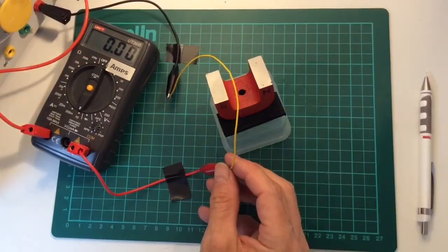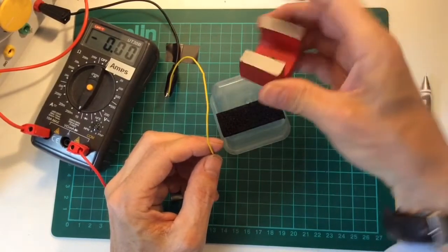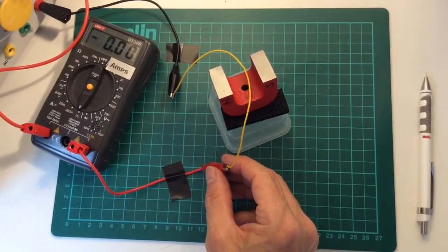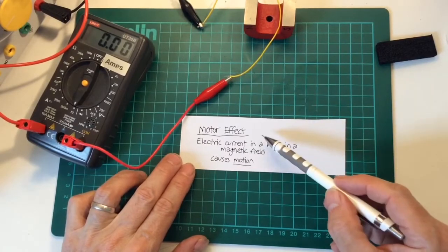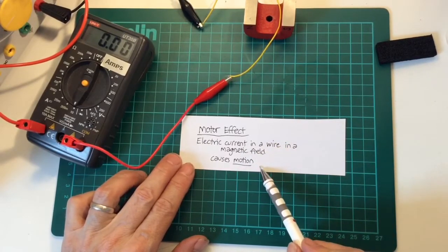If I reverse the current the wire moves the other way. If I reverse the magnetic field the wire moves the other way again. This is called the motor effect. An electric current in a wire in a magnetic field causes motion.